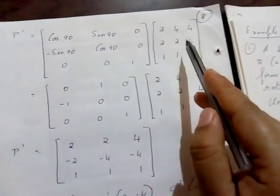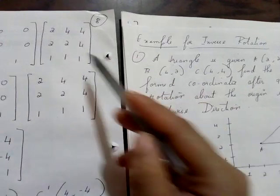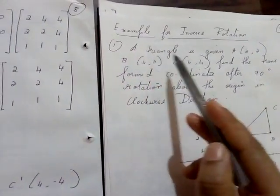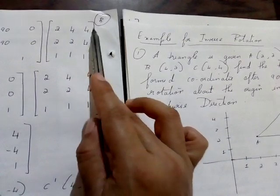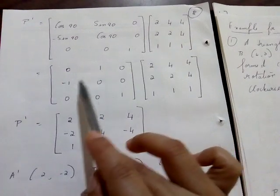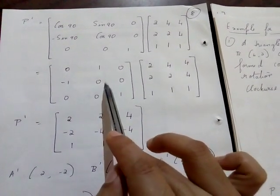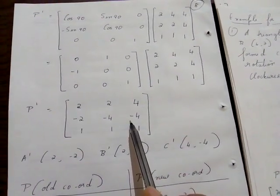So x-dash, y-dash, 1 equals the inverse rotation matrix applied to old coordinates. Theta is 90 degrees, so cos 90 = 0 and sin 90 = 1. The old coordinates 2,2 / 4,2 / 4,4 are converted into a 3×3 homogeneous matrix with the third row all ones. After performing the matrix multiplication, you get the result.